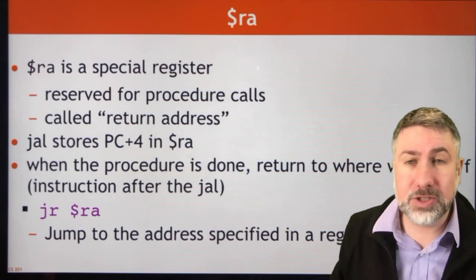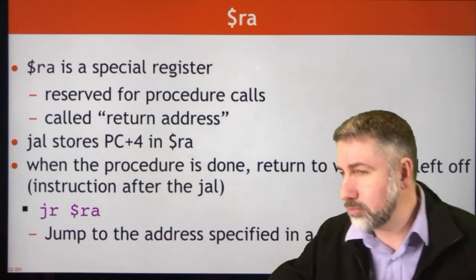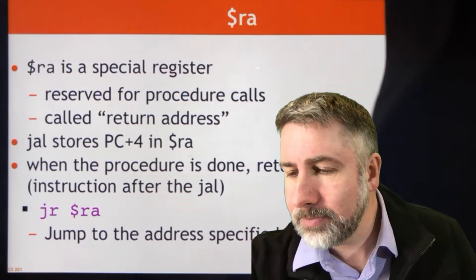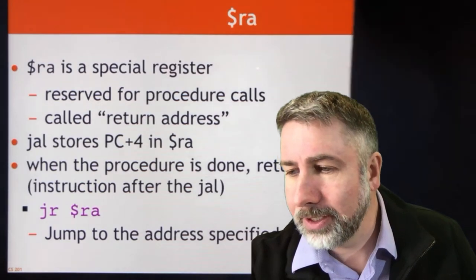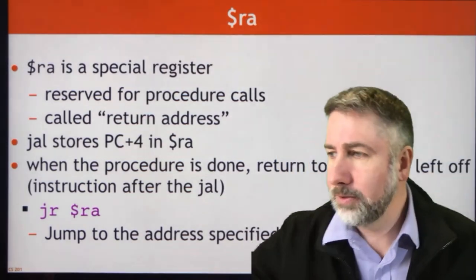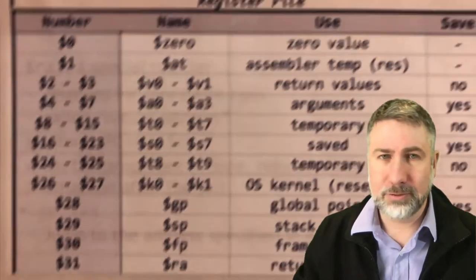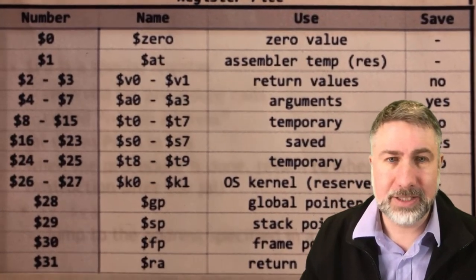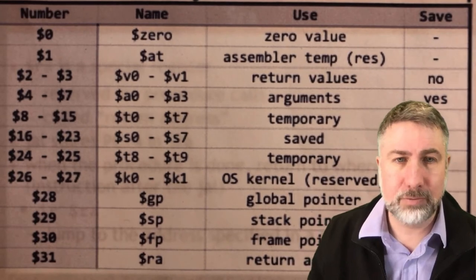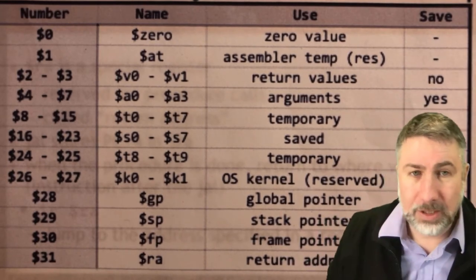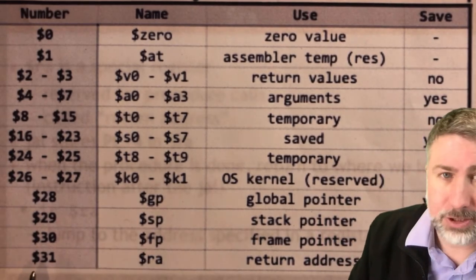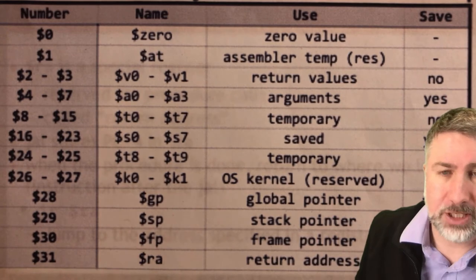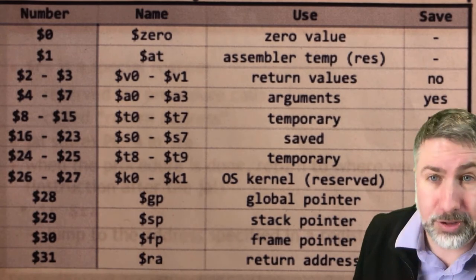We're going to use a special reserved register called the return address register. The register file contains a whole bunch of registers. One special register — in fact the last register — is called the return address register 31.